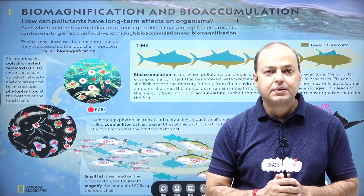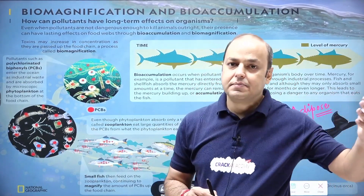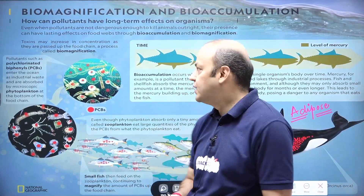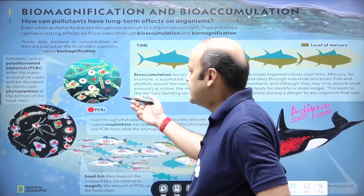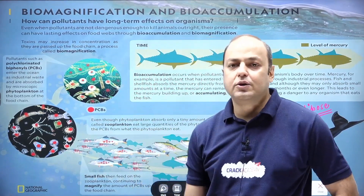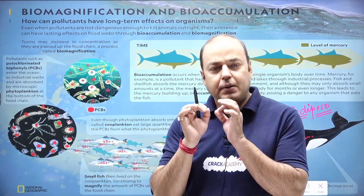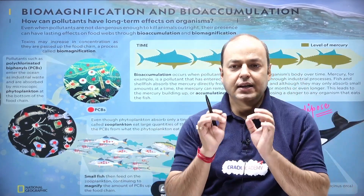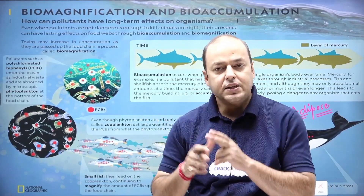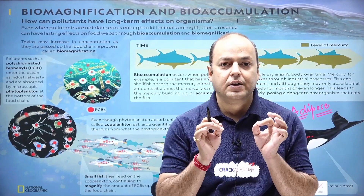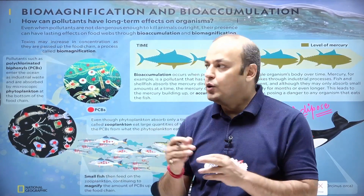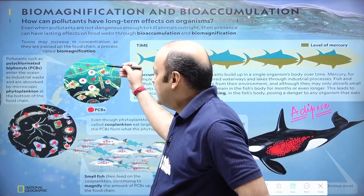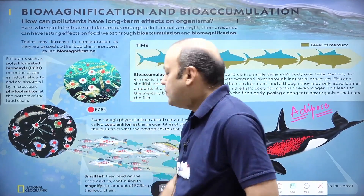Biomagnification is something where a number of organisms are involved. We all know when organisms of different species are involved, it is called a food chain. As you can see, these are phytoplanktons — tiny green plants that move from here to there. The literal meaning of phytoplankton is floating plants that move around. Similarly, zooplanktons are tiny organisms that move from here to there. So if there is a toxin, for example polychlorinated biphenyl — that is PCB — and it gets into this phytoplankton, it will then be eaten by zooplankton.